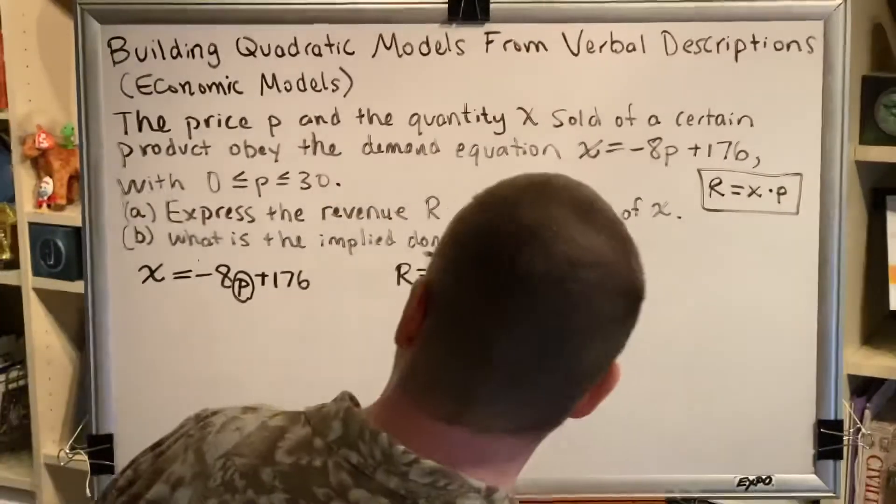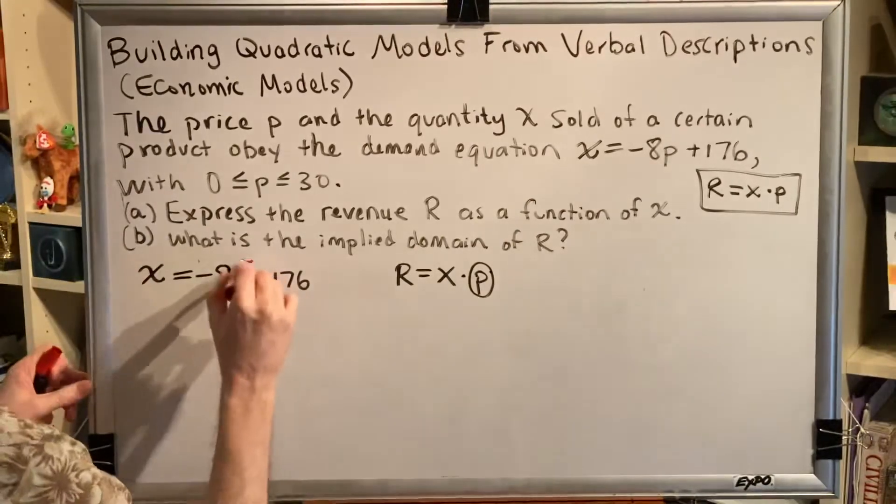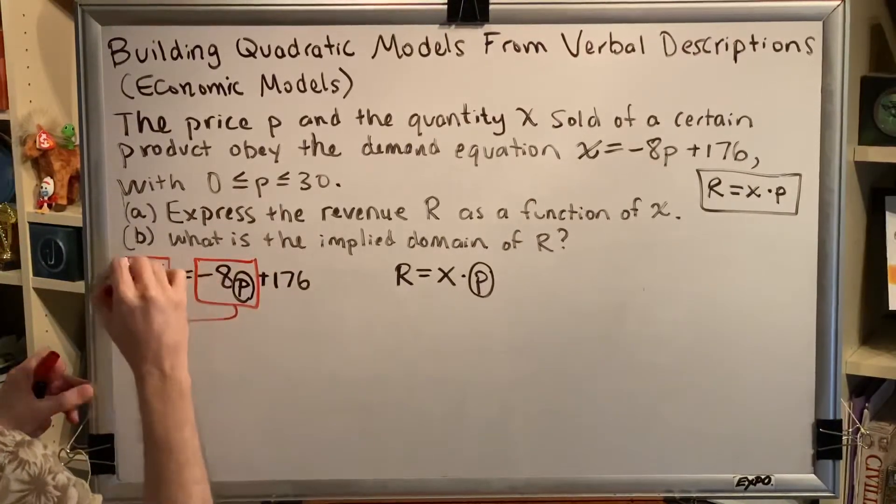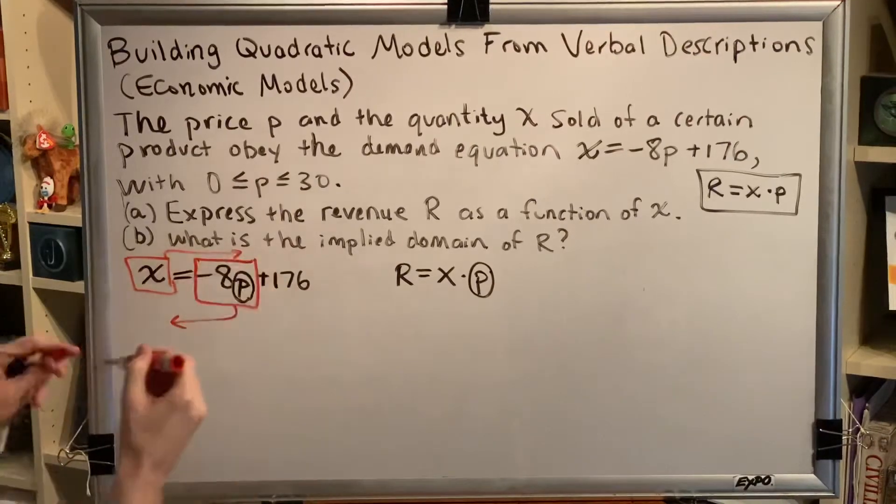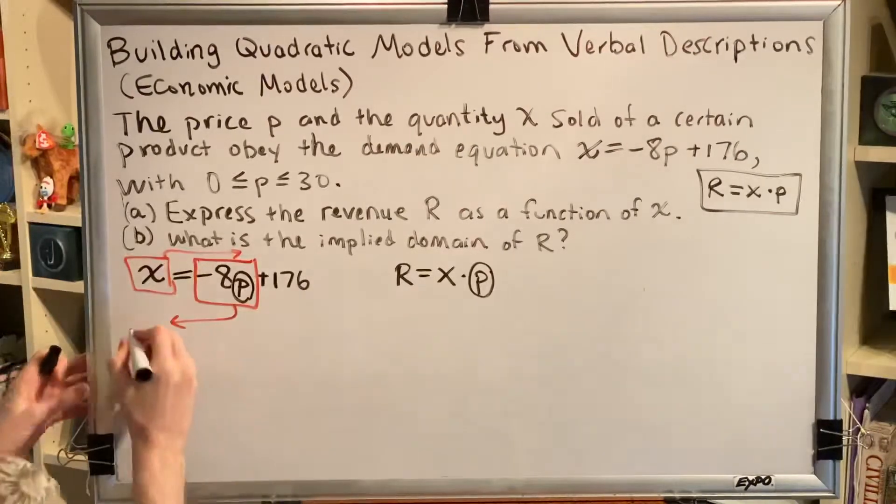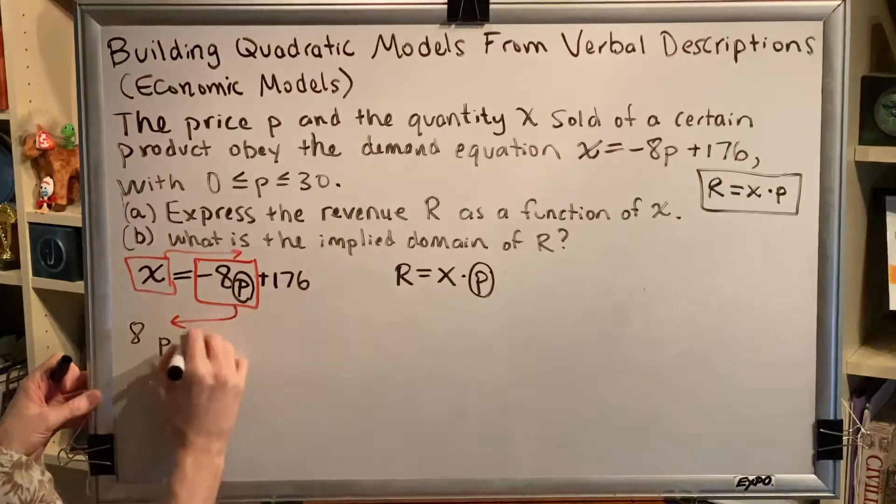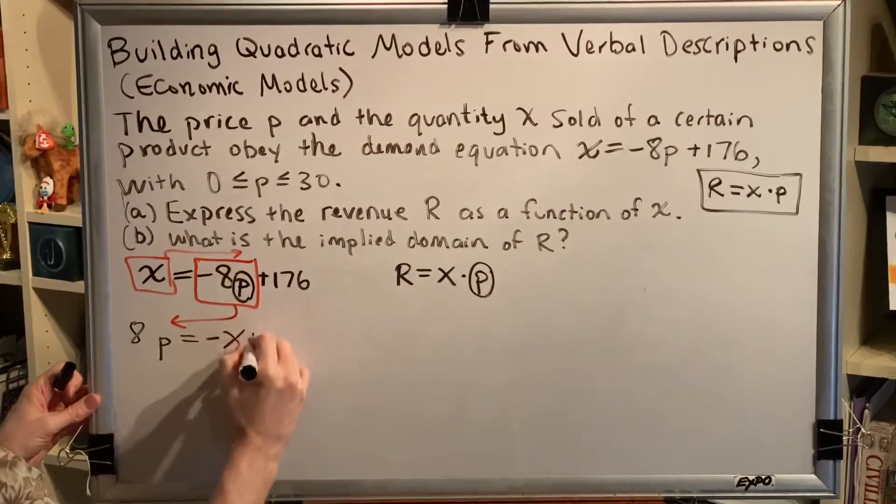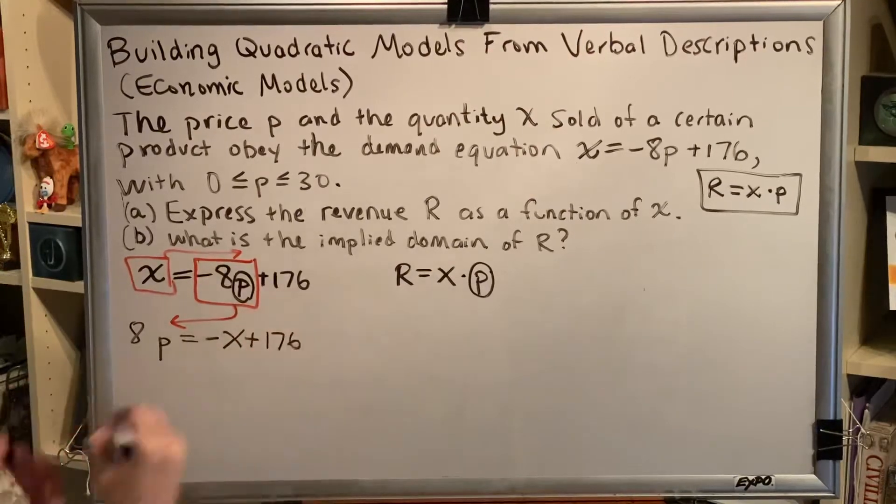First thing we're going to do is we're going to swap a couple of terms. We're going to pick this term up and move it to this side, and we're going to pick this term up and move it to this side. And we'll remind ourselves that when a term changes sides, it changes signs. So positive 8p on the left equals negative x plus 176 on the right.